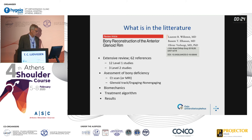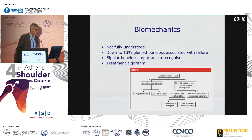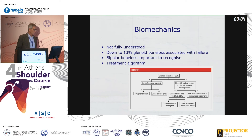They assessed bony deficiency with CT scan or MRI, glenoid track, biomechanics, treatment algorithm, and results. The biomechanics of shoulder instability is still not fully understood, but many authors now state that down to 13% glenoid bone loss can be associated with failure of soft tissue procedures, and bipolar bone loss is very important to recognize.